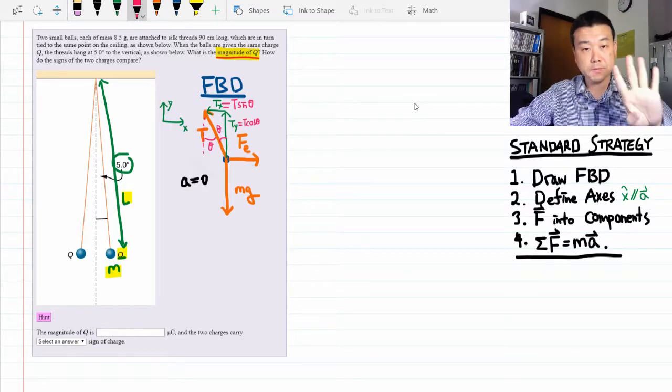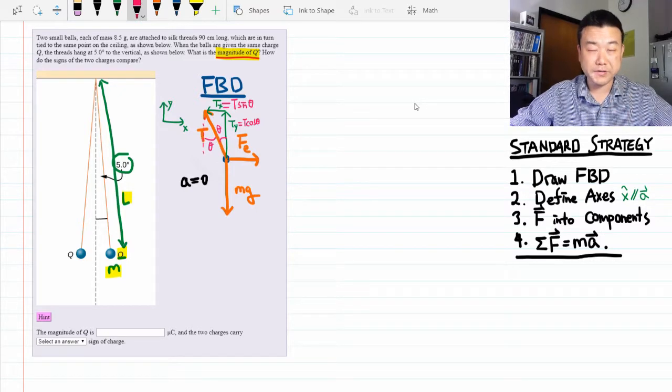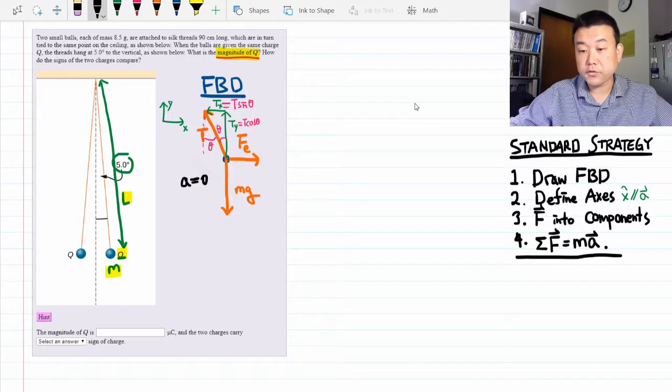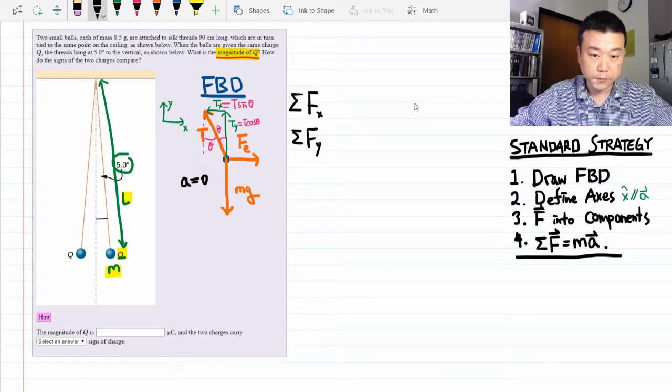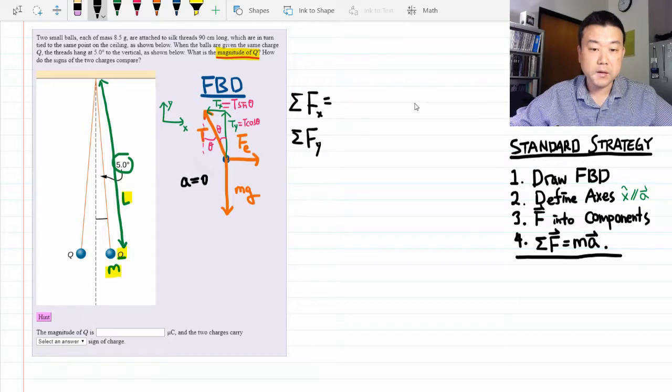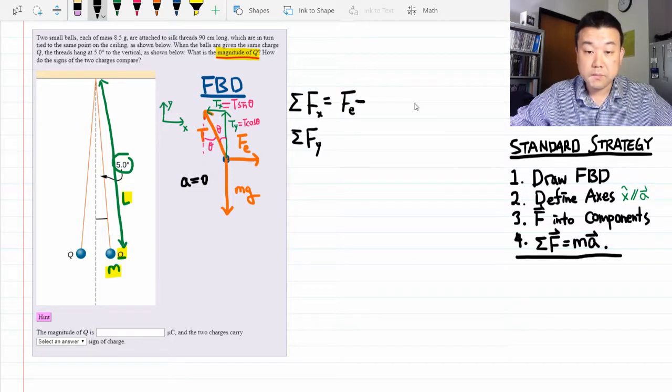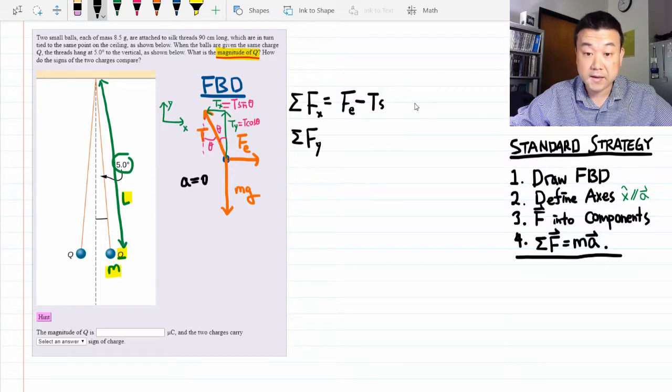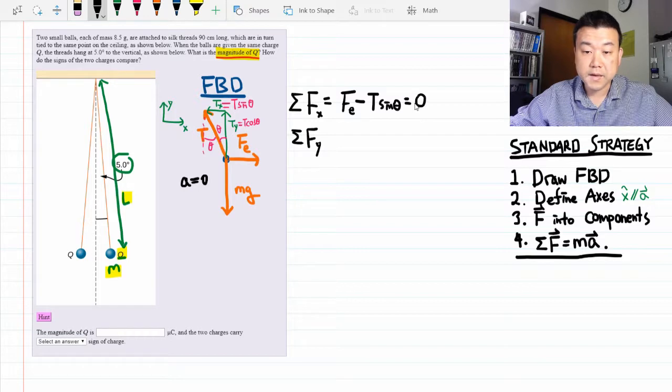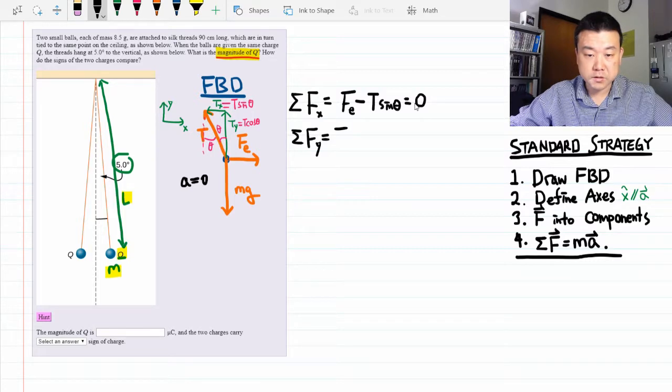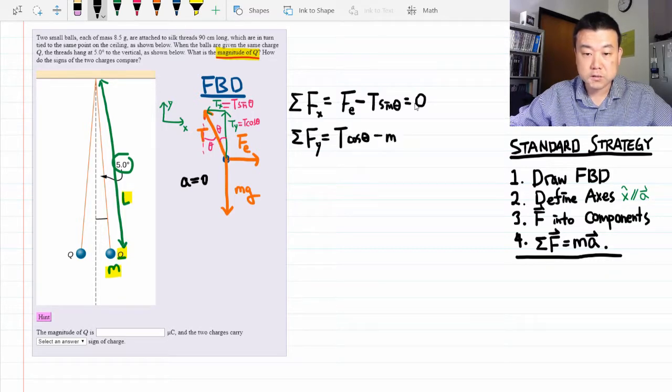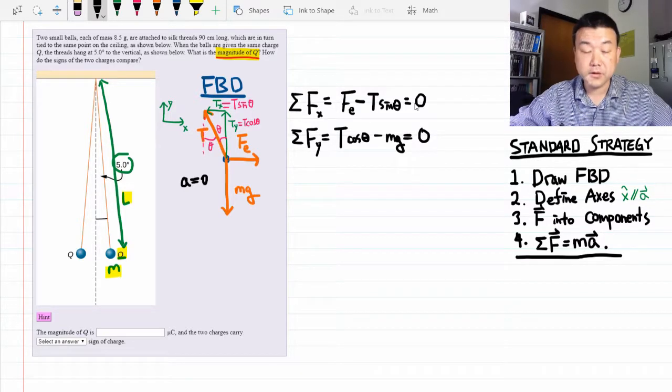All right, now we are ready for step number four, writing down Newton's second law equations. The thing to remember here is we need to write down Newton's second law equations for each axis and each object. So we need to write it down for the x component and for the y component. It looks like we have two forces in each of the components. So let me write it down. The electric force minus the x component of tension Tx or T sine theta is equal to zero mass times acceleration. And the y component of forces, the y component of tension T cosine theta minus mg is equal to also zero mass times acceleration.